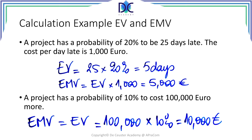Let's look at an example of how to calculate the expected value and the expected monetary value in two different cases. The first case: a project has a probability of 20% to be 25 days late, and the cost per day late is one thousand euro. The expected value is 25 times 20% equals five days. To get the expected monetary value, we multiply the expected value by one thousand, which gives an expected monetary value of five thousand euro. But be careful — this is just a statistical approach to risk, used in order to prepare risk budgets.